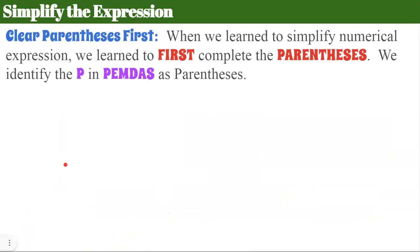Now let's simplify an expression where we have to clear the parentheses first. So when we learn to simplify a numerical expression, we learn to first complete the parentheses. We identify the P in PEMDAS as parentheses. So that means if you see an expression like this, you have to do the parentheses first. And when you have an algebraic expression and you can't find a numerical value, you need to distribute.